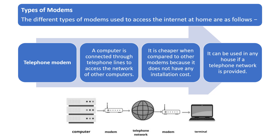This is a diagram to understand the telephone modem. A modem is connected to a computer, which in turn is connected to the telephone network, which in turn is connected to another modem. The terminal is an interactable unit at the other end of the telephone network. This is how a telephone modem works and how the internet is accessed through it.